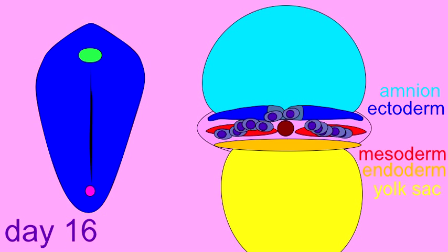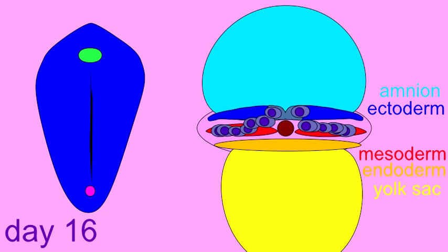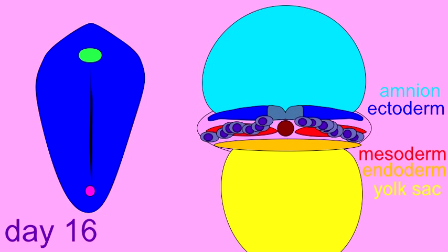Cells obtain messages from their position and the other cells they pass as they differentiate and choose cell fates.